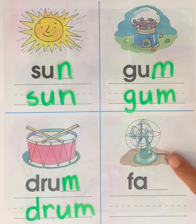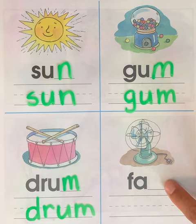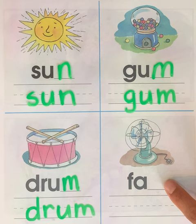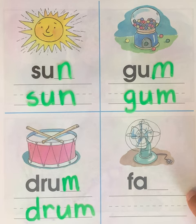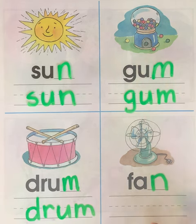The last picture is a picture of a fan. Can you say the word fan? What ending sound do you hear in the word fan? Do you hear the sound M or N? Say the word again. Fan. Good. I hear the N sound for the letter N. Say it with me one more time. Fan.